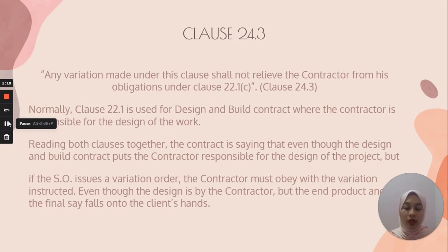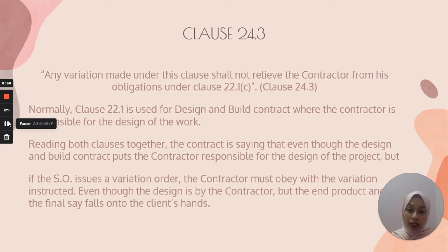Next is Clause 24.3. Normally, Clause 22.1 is used for design and build contracts where the contractor is responsible for the designs of the work. Reading both clauses together, the contract says that even though in a design and build contract the contractor is responsible for the design of the project, if the SO issues a variation order, the contractor must comply with the variation instructed. Even though the design is by the contractor, the final say falls into the client's hands.